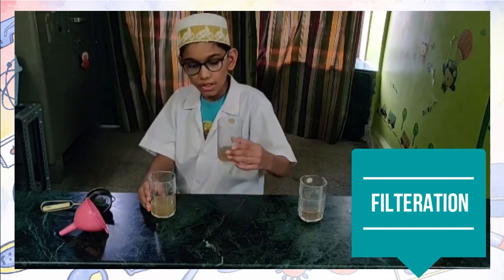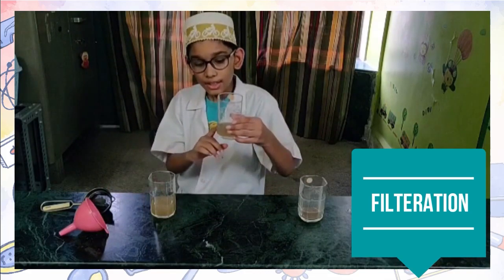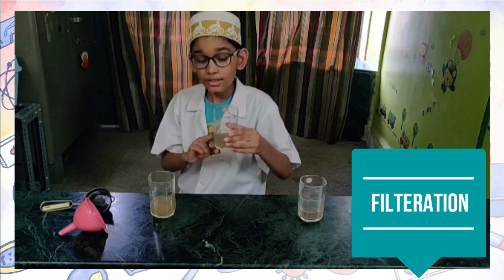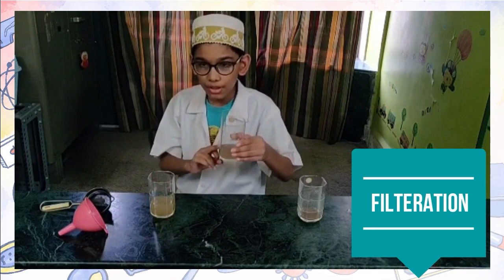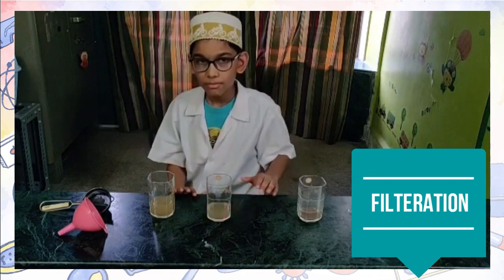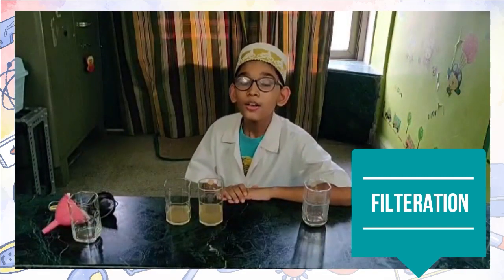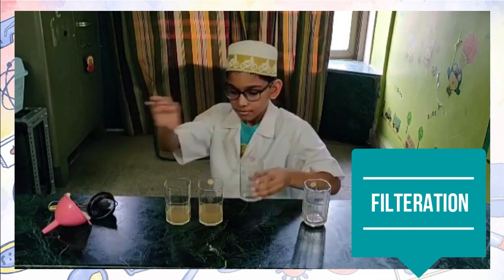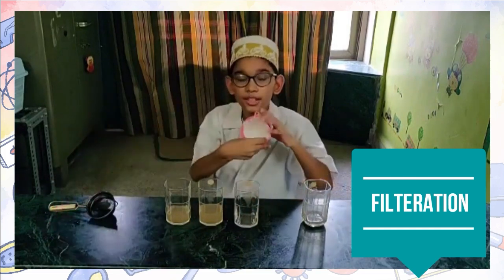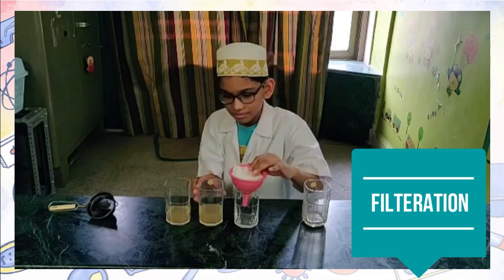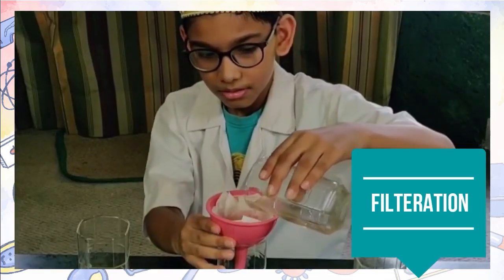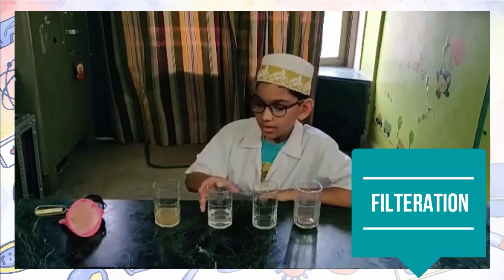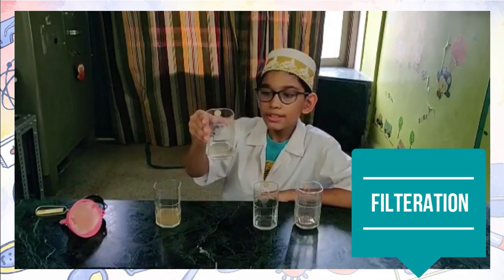Now you can see that the water is cleaner than before using the tea strainer, but it still contains some impurities. Now we are going to filter it with a fine cloth, and then use filter paper to completely clean the water. Now you can see the water is completely clear.